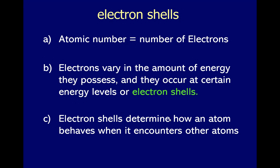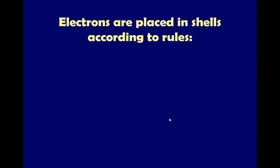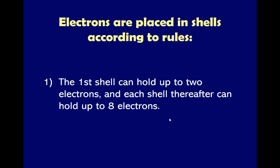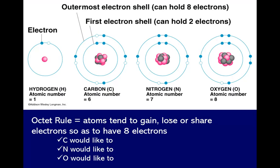Electrons are subjected to interaction with other atoms. Electrons are placed in shells according to rules. The first shell can hold up to two electrons only, and each shell after the first can hold up to eight electrons. That is the rule for placing electrons in specific electron shells.